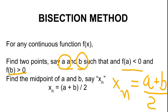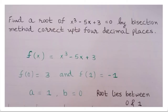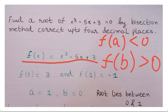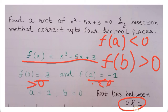This will be more clear if we solve an example. Find a root of x³ − 5x + 3 = 0 by the bisection method, correct up to 4 decimal places. Here, f(x) = x³ − 5x + 3. We need to find two points where f(a) < 0 and f(b) > 0. When x = 0, f(0) = 3, and when x = 1, f(1) = −1. So f(1) < 0 and f(0) > 0, meaning the root lies between 0 and 1. Hence, a = 1 and b = 0.